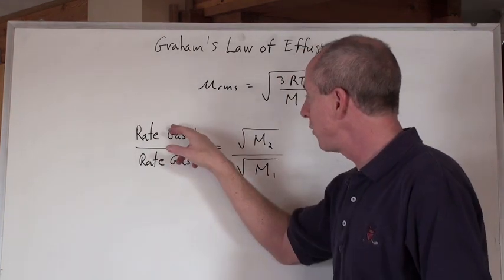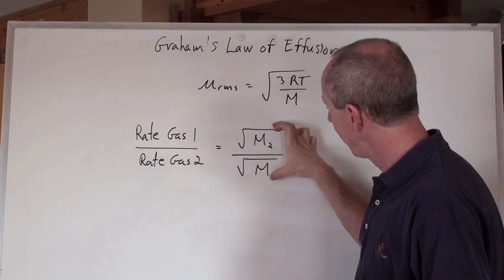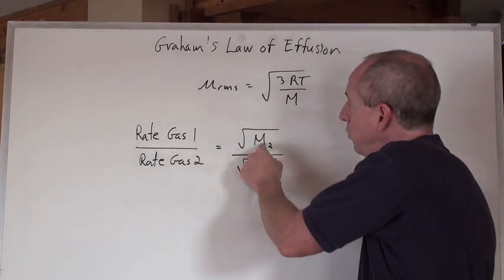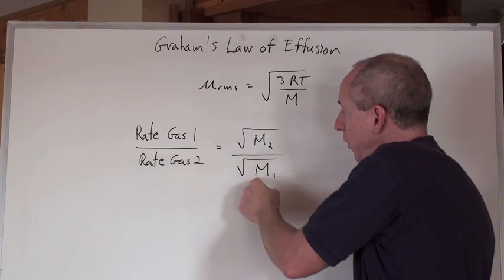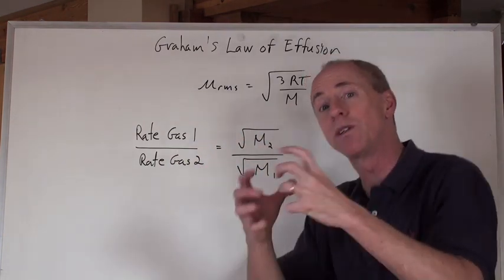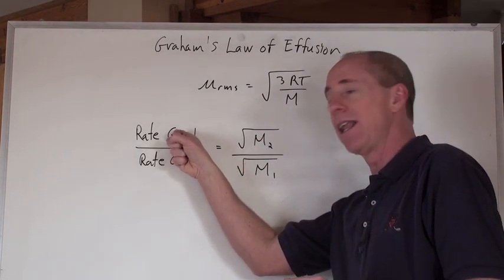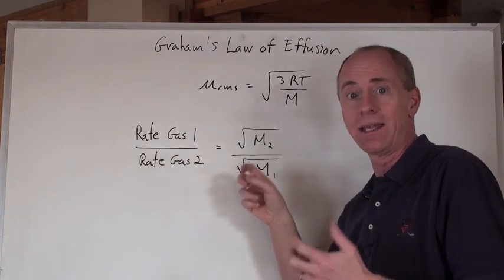You're going to get the light gas moving faster than that heavy gas, and that's expressed right here in the square root of the molar mass of gas 2, the heavier one, over the lighter one here, which gives you a number greater than 1, which will tell you how much faster gas 1 is, the light one is, over gas 2.